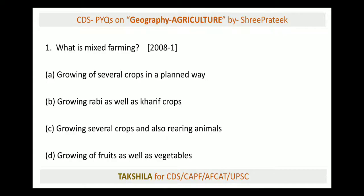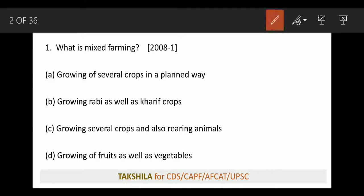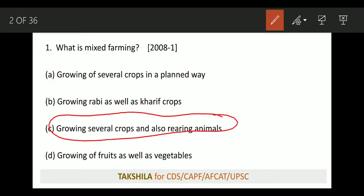What is mixed farming? Options: (A) growing several crops in a planned way, (B) growing Rabi as well as Kharif crops, (C) growing several crops and also rearing animals. This is a very good question. Mixed farming means when you grow crops as well as rear animals — growing crops and animal rearing together. So option C is the correct answer for mixed farming.